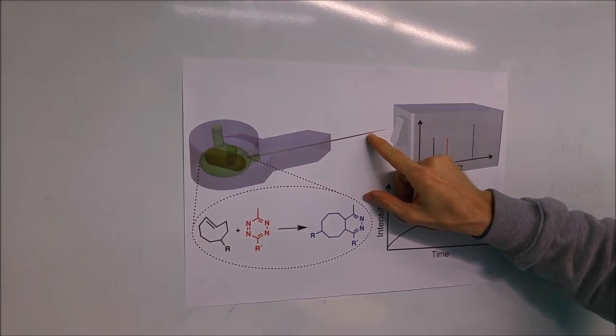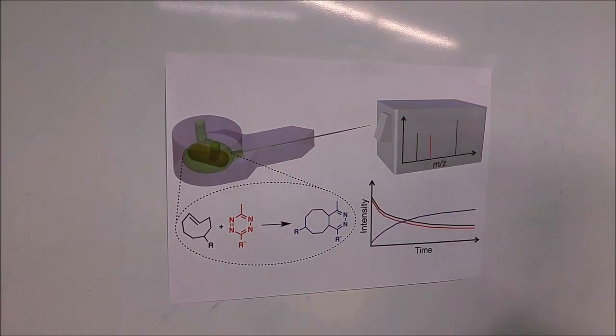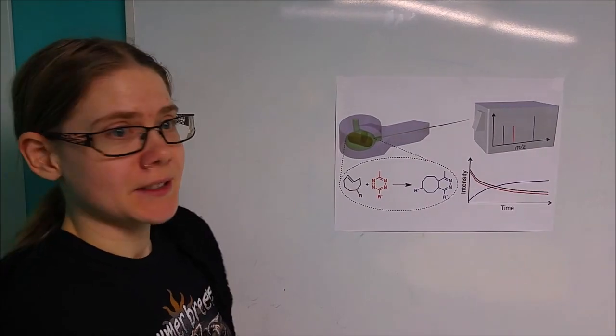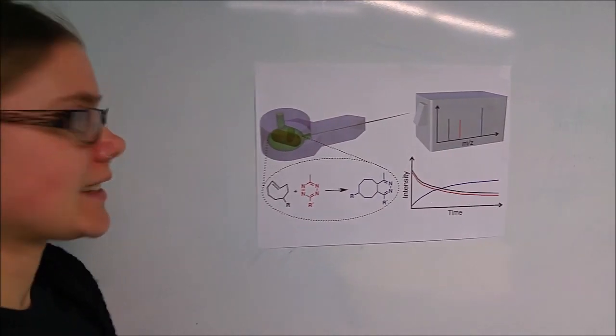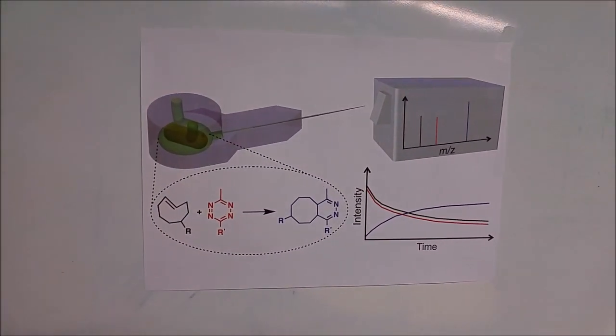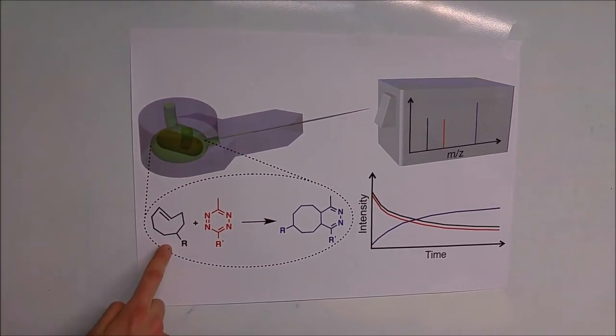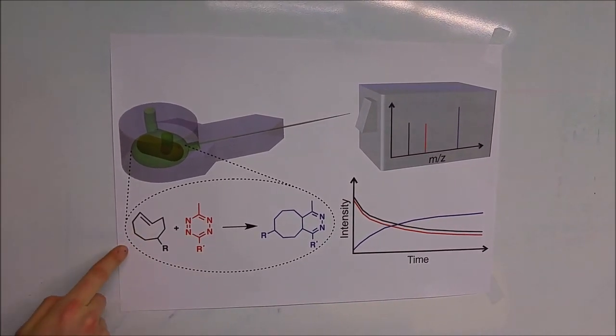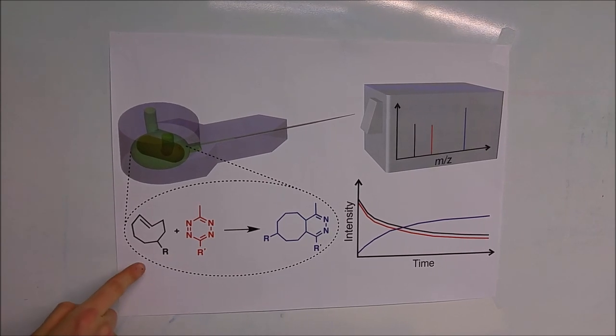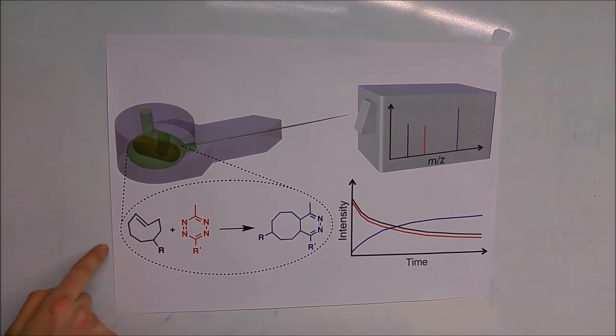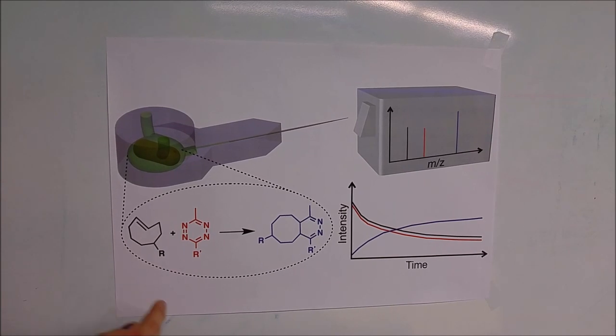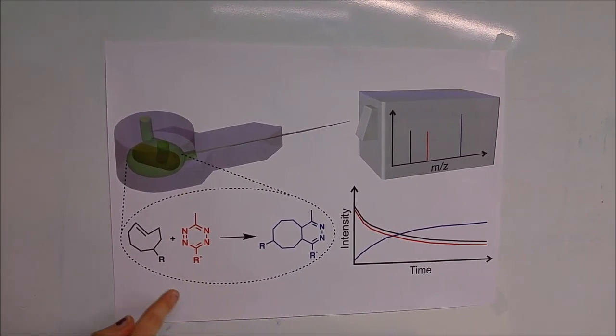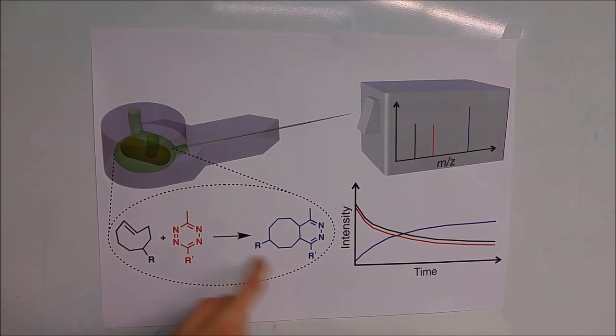The reaction that we chose to study with this 3D printed micro-reactor is a Diels-Alder and retro-Diels-Alder reaction that is occurring between this trans-cyclooctene and the tetrazine here. The very high strain of the double bond of the trans-cyclooctene is making the reaction relatively fast and energetically favored. And we are then, by losing nitrogen gas, forming this final product here in blue.